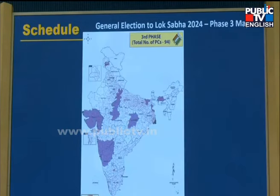Iska map kuch is taray se dikhai dhega. Rajasthan hum cover kar chuke honge, Tamil Nadu cover kar chuke honge, Kerala cover kar chuke honge. Gujarat is mein cover kar lenge. North East pura cover kar chuke honge.